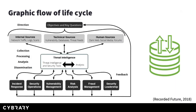Graphic representations are a big differentiator when understanding a topic. Here we have a graphic flow of the cyberthreat intelligence life cycle created by Recorded Future. In the upper left corner of the graphic, we have the direction phase — the first and one of the most important steps, ensuring all subsequent activities are aligned with the organization's objectives. Next, there is a transversal section where the sources of information are obtained, since the right sources aligned with the organization's objectives will provide the necessary information for the next steps.